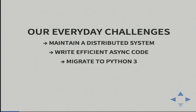Let's move to the challenges that led us to these solutions. We have a very distributed system — not just one server, but many services communicating over the network via HTTP APIs. We learned that doing that asynchronously makes it way more efficient. We couldn't just use Django because internally that would not be very performant. We're also on our way to migrating to Python 3, like probably most of you — some modules run Python 3, some still run Python 2.